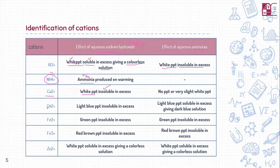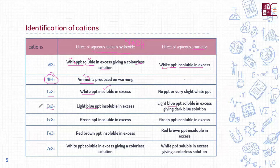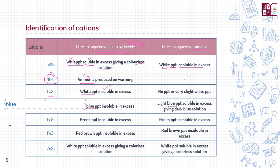The distinctive feature for copper is blue precipitates — blue precipitates form in both conditions: sodium hydroxide and aqueous ammonia. Blue is the key thing to identify copper. If it is sodium hydroxide, the blue precipitates are insoluble in excess. If it is aqueous ammonia, the precipitates are soluble in excess, giving you a dark blue solution of copper.